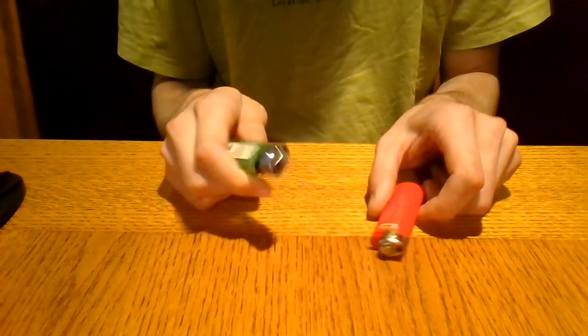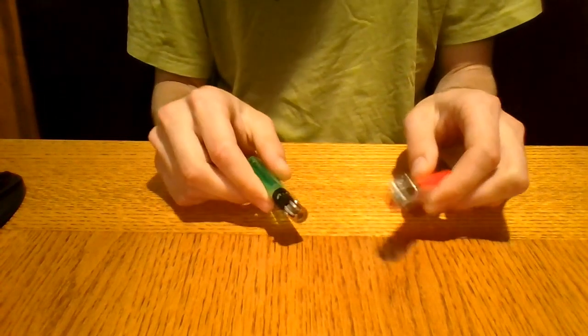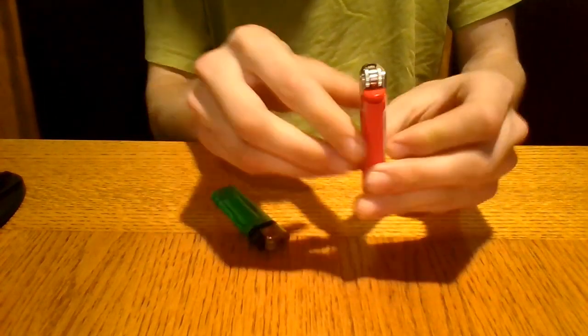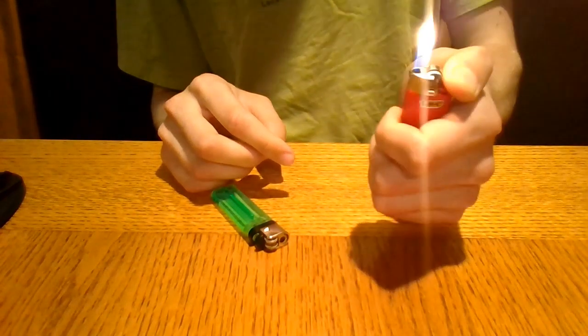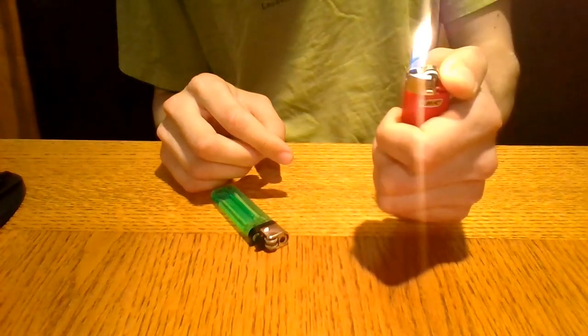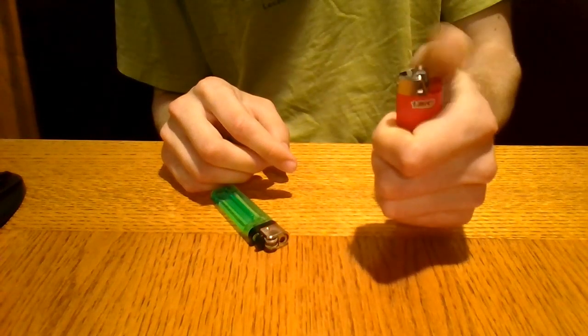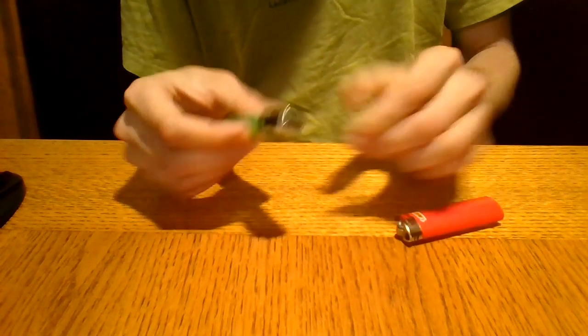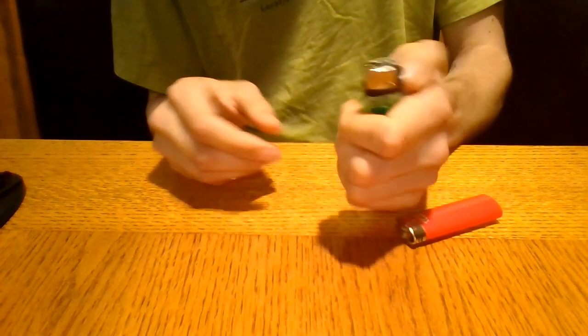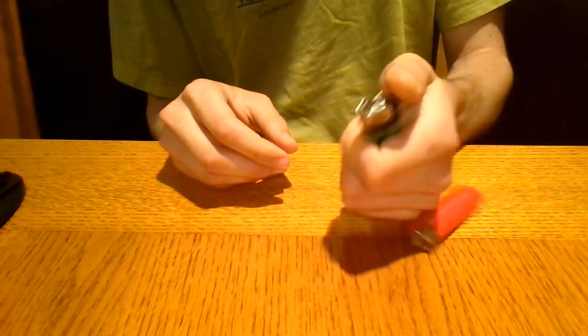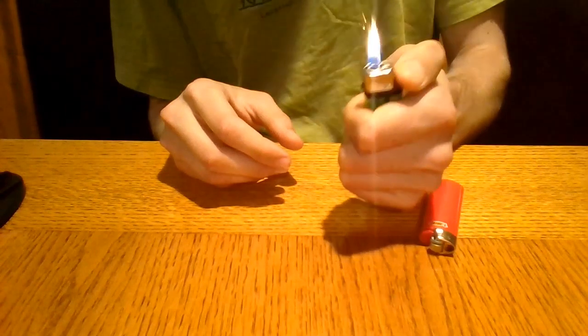Now as for features, the BIC lighter is pretty traditional. You just have the striker and then the button to hold down to let the lighter fluid out. The dollar store lighter is very similar, same way you strike it and it lights.